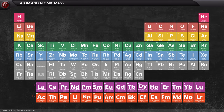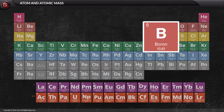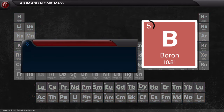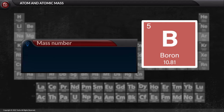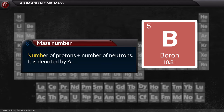To understand the atom, we should also be familiar with a few terms. Atomic number is the number of protons present in the atom, denoted by Z. Mass number is the number of protons plus the number of neutrons, denoted by A.